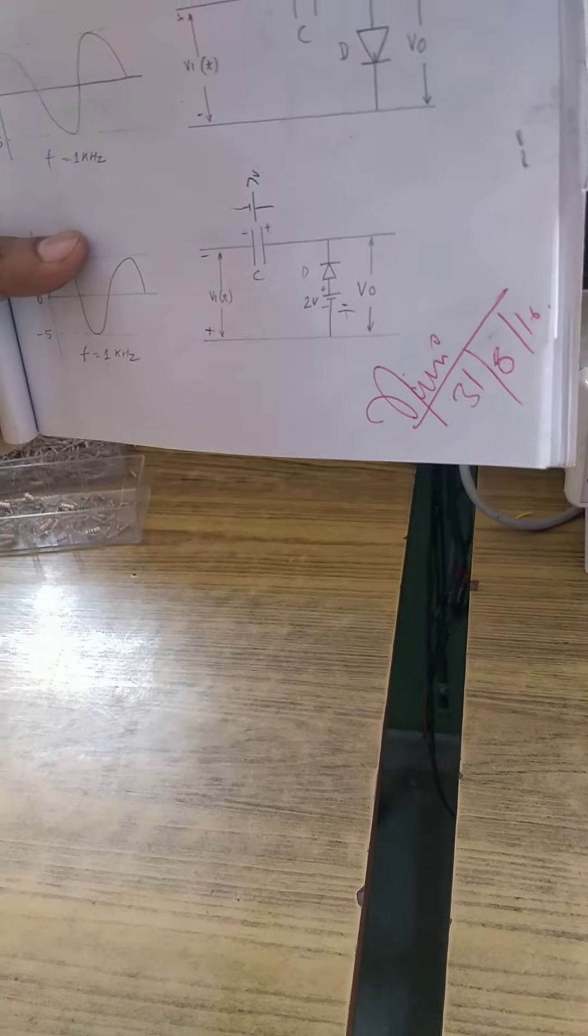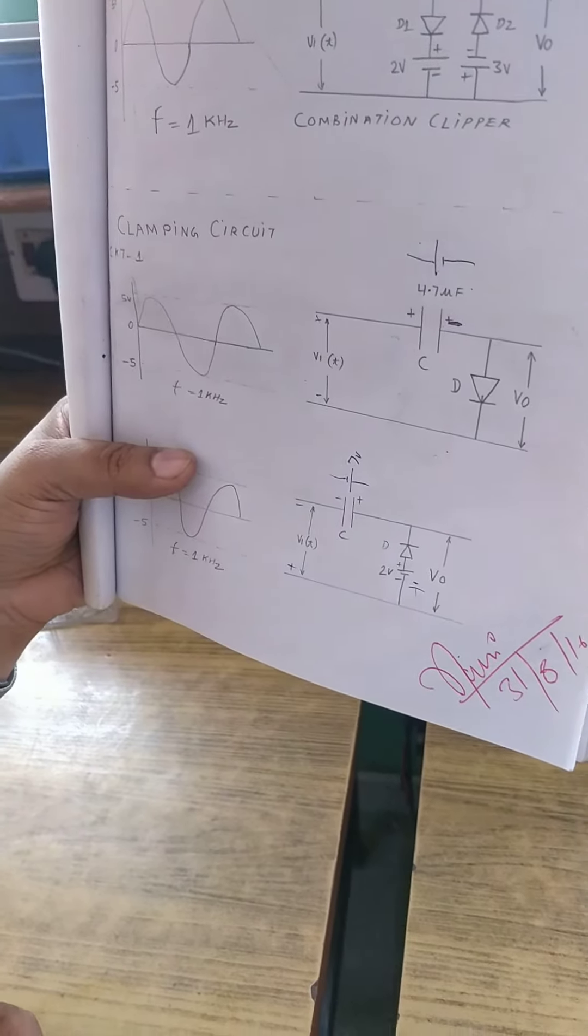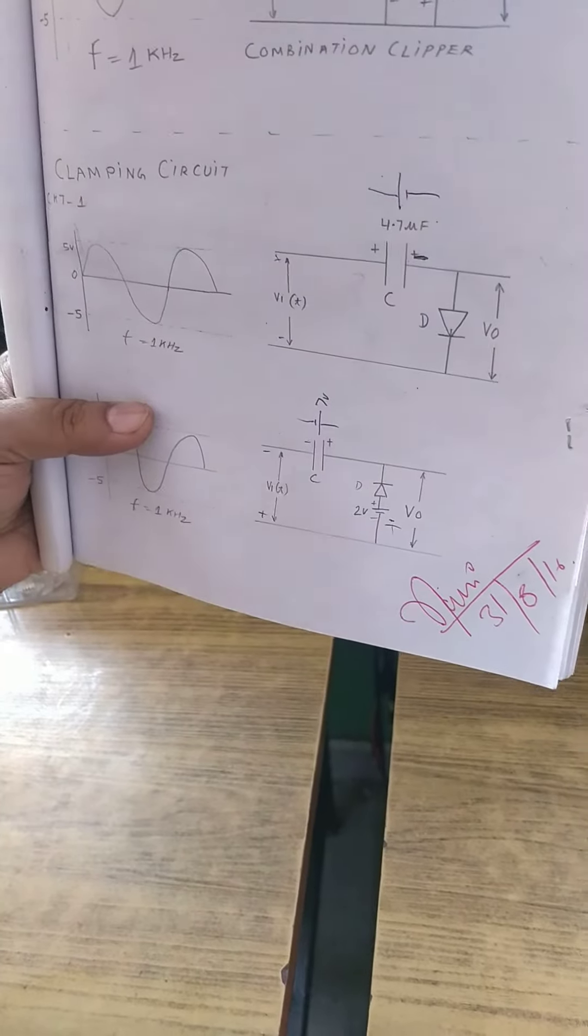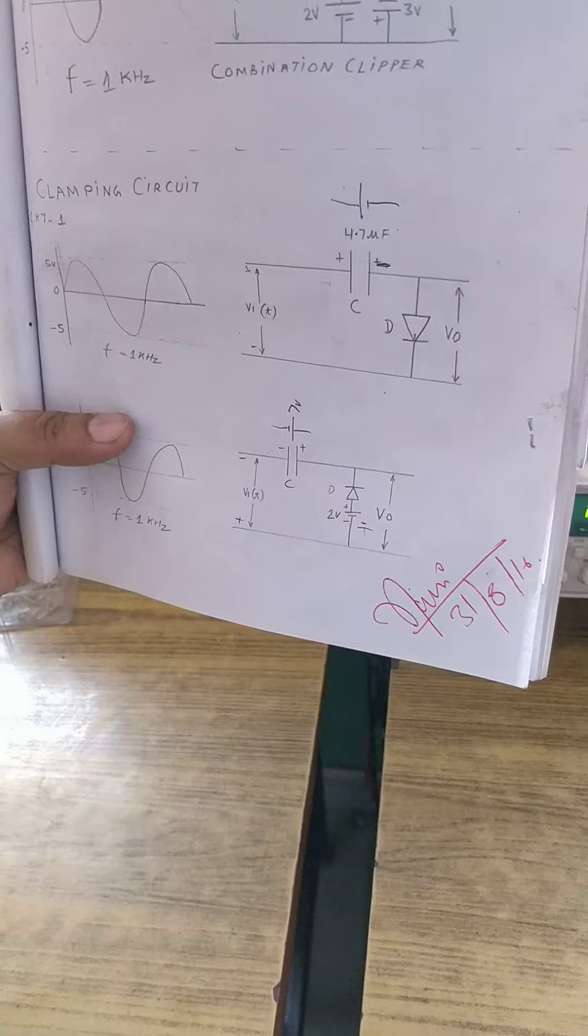That is, if you are given sinusoidal, it will remain sinusoidal. There is no clipping as such, which we have seen during your experiment with clipper circuit. So we shift upward or downward. Maybe the complete positive side is shifted upward or downward.